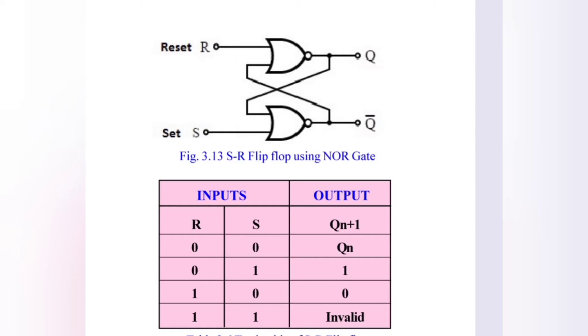When both S and R are 1, this is an invalid state for the SR flip-flop.